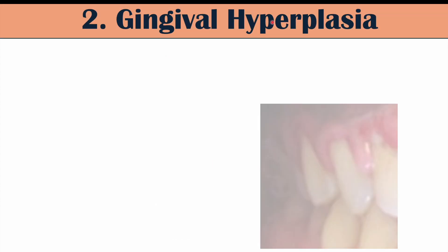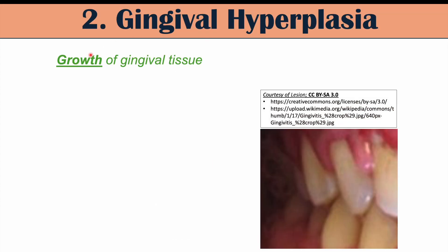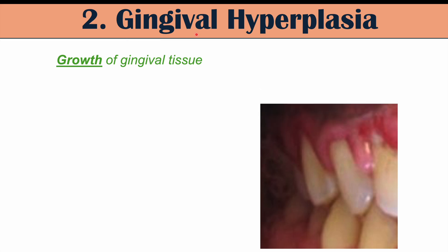A particular finding in the mouth of patients taking amlodipine is gingival hyperplasia. Gingival hyperplasia is growth of gingival tissue — the gingiva, or gums of the mouth. Hyperplasia refers to excessive growth, so we can see increased growth of gingival tissue in some patients. This increased gum tissue can also increase the risk of bleeding gums.